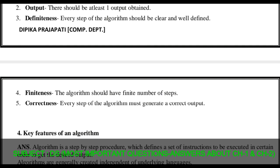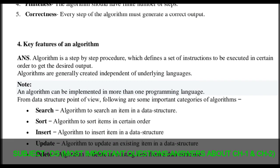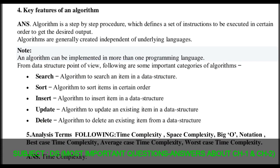Question number four: key features of an algorithm. An algorithm is a step-by-step procedure which defines a set of instructions to be executed in a certain order to get a desired output. Algorithms are generally created independent of the underlying language — an algorithm can be implemented in more than one programming language. From the data structure point of view, important categories of algorithm are: search, sort, insert, update, and delete. Search finds an item in a data structure; sort arranges data in a certain order; insert adds an item; update modifies an existing item; and delete removes an item from a data structure.